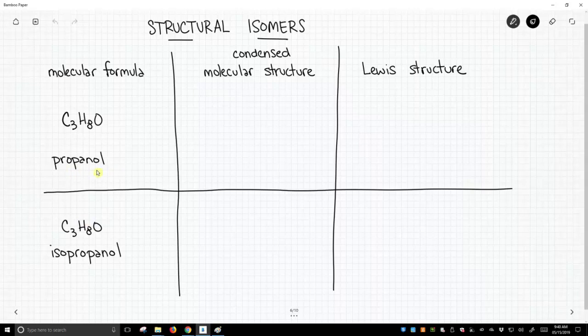The top formula is for propanol, and the bottom one is for isopropanol. Molecular formula doesn't show you connectivity, but condensed molecular structures and Lewis structures will give you connectivity information.